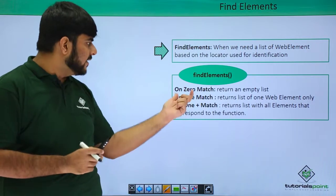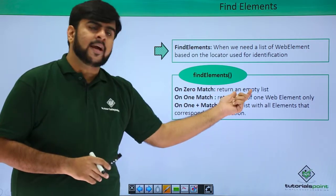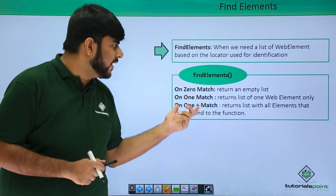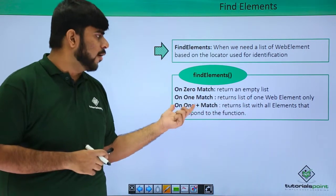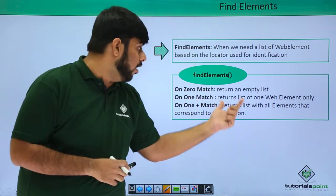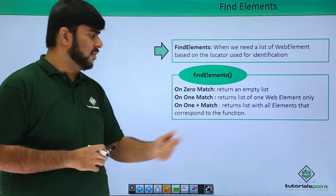So, what it returns? If there is no match, then we get an empty list. If there is one match, then we get the list with one element. If there are one plus matches, then all the elements are returned in the list.